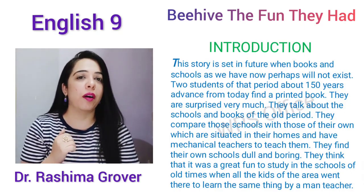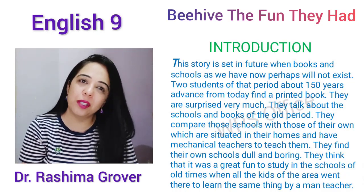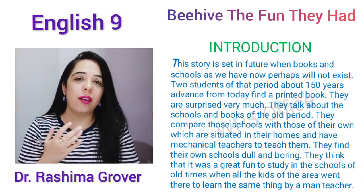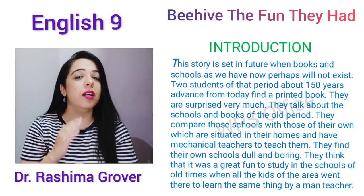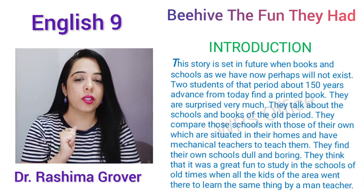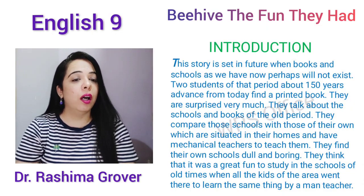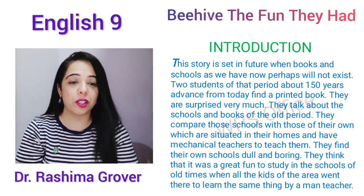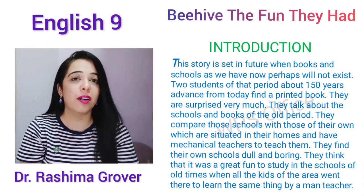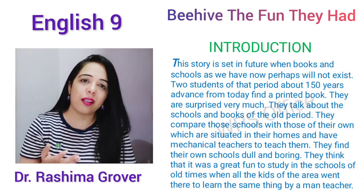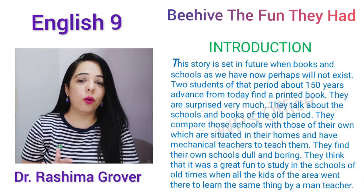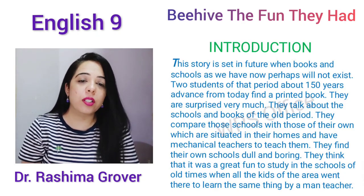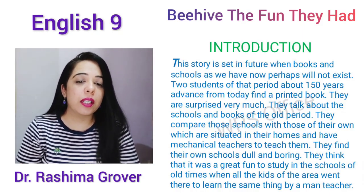Now, what kind of books do you have? You have printed paper books, and what kind of teachers do you have? You have human teachers. And what kind of schools do you have? You have buildings, and all the students go there to study. But what will happen after 150 years? It will entirely change. Those two students have mechanical teachers, not human teachers. They have e-books, online books, not printed books. Their bedrooms — their rooms — are their schools. So they feel very bored and start comparing their schools with the olden schools. They find their own schools dull and boring. They think it was great fun to study in the schools of old times when all the kids of the area went there to learn the same thing by a man teacher.